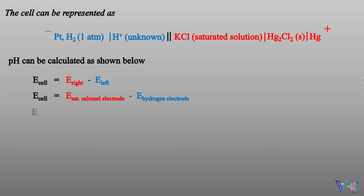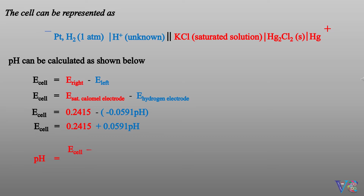That is, EMF of the cell = 0.2415 − (−0.0591·pH), so EMF of the cell = 0.2415 + 0.0591·pH. Therefore, pH = (EMF of the cell − 0.2415) / 0.0591.